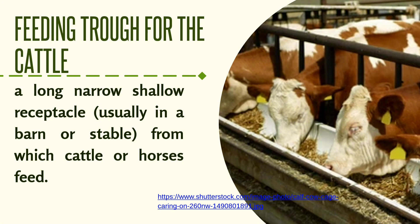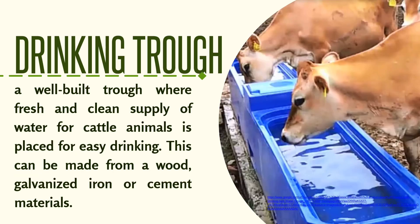The feeding trough is a long, narrow, shallow receptacle from which cattle or horses feed. The drinking trough is a well-built trough where a fresh and clean supply of water for cattle animals is placed for easy drinking. This can be made from wood, galvanized iron, or cement materials.